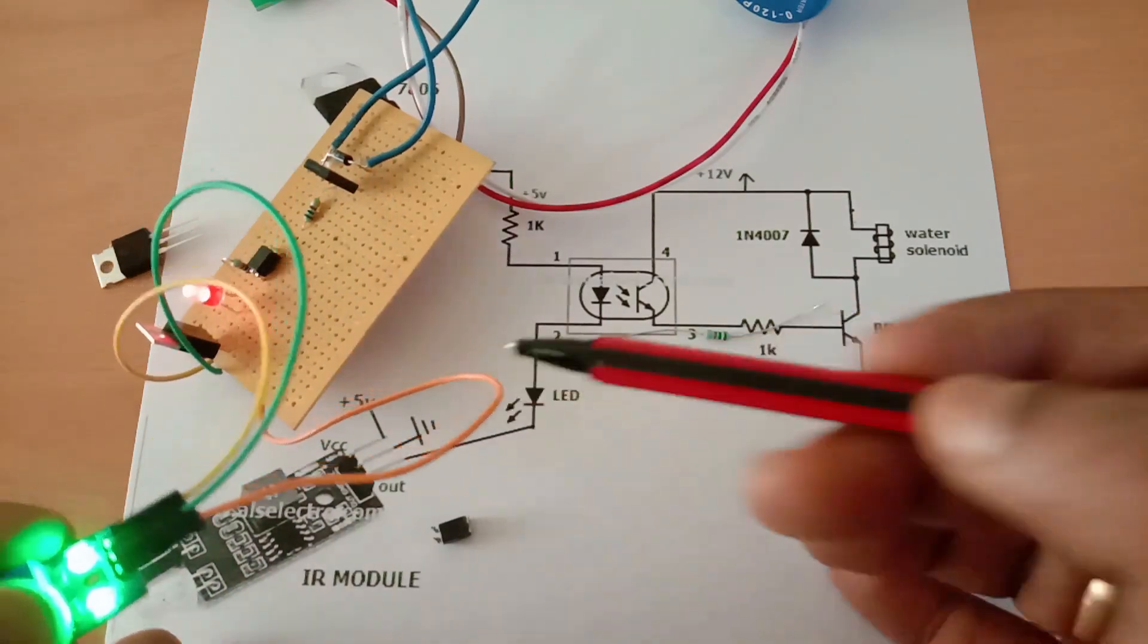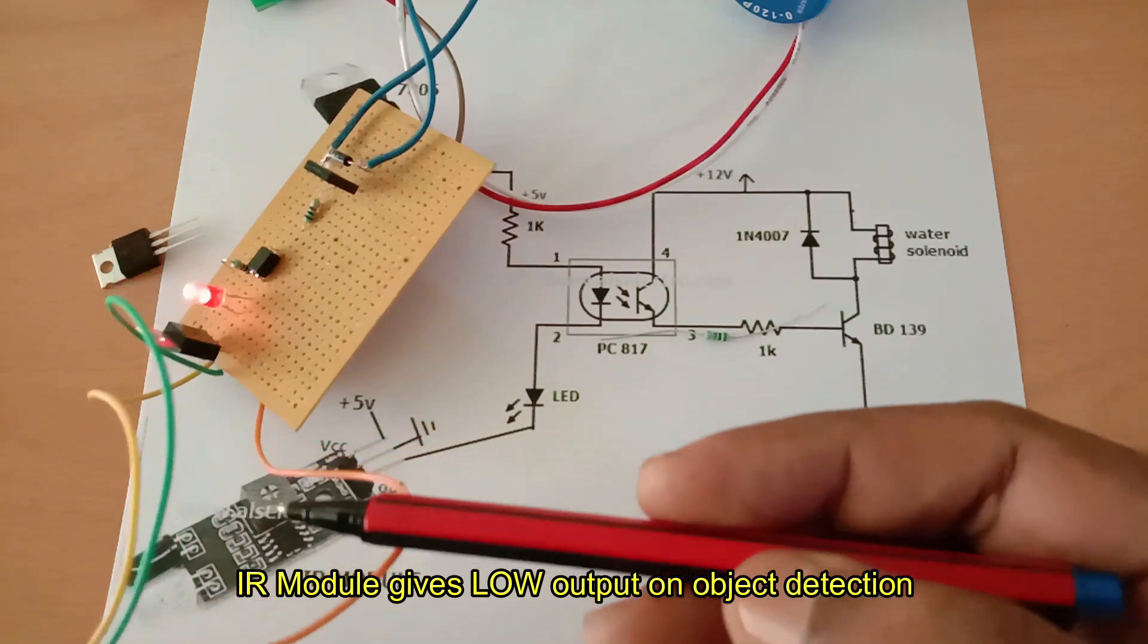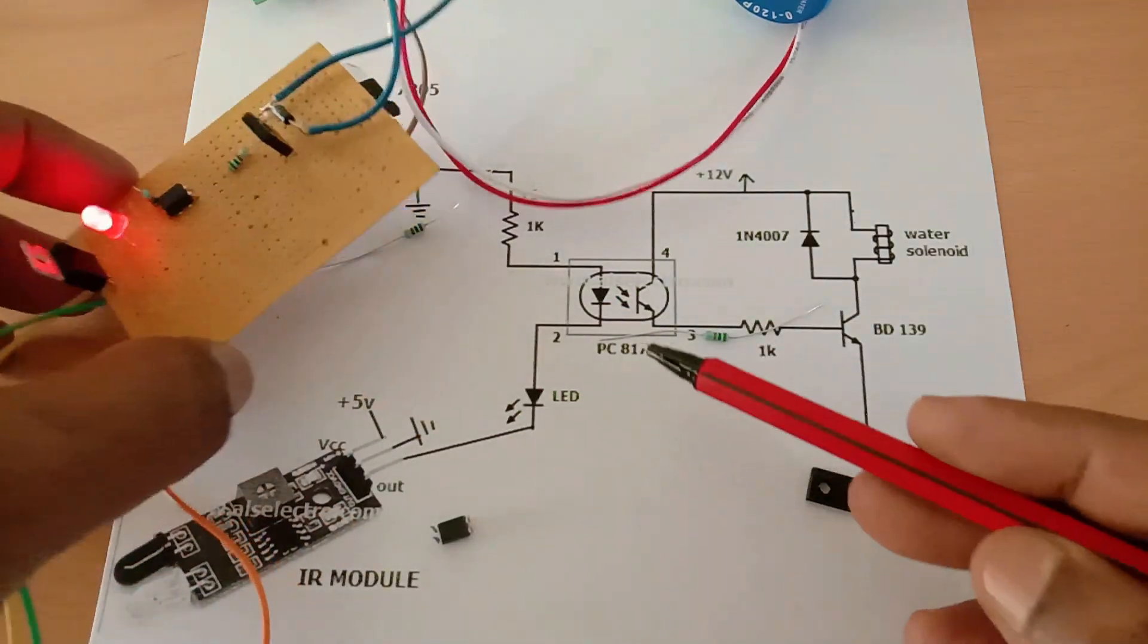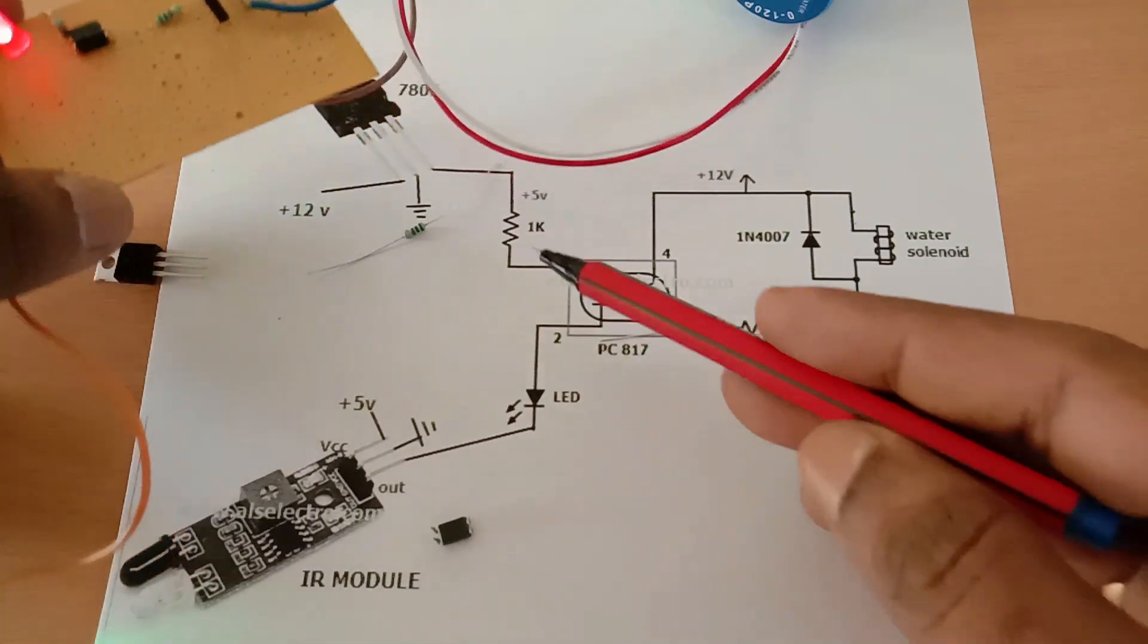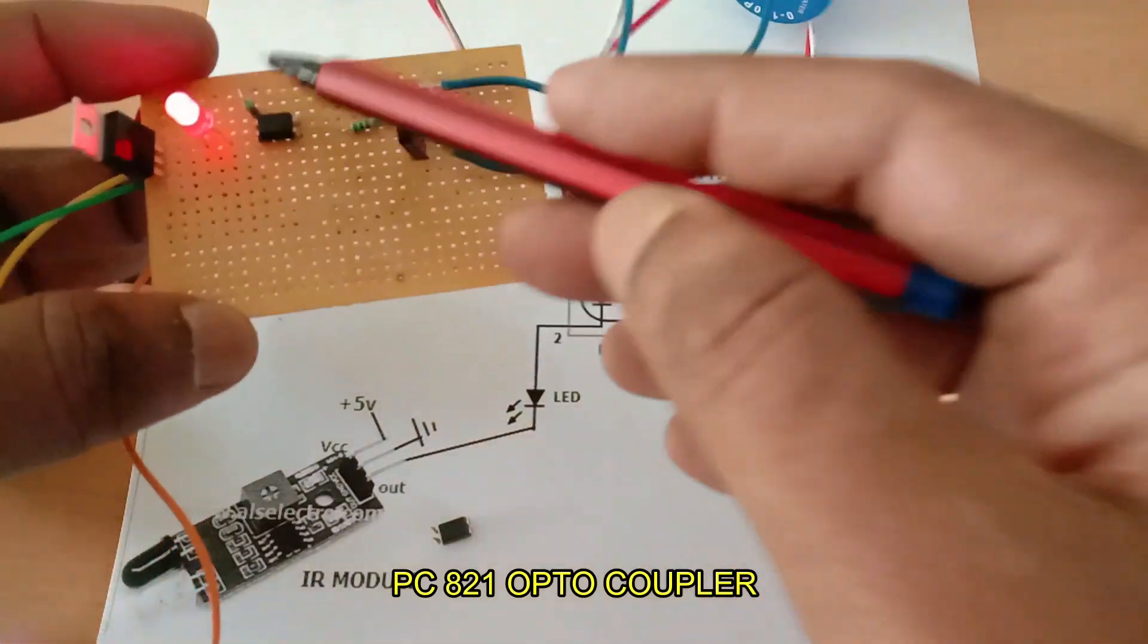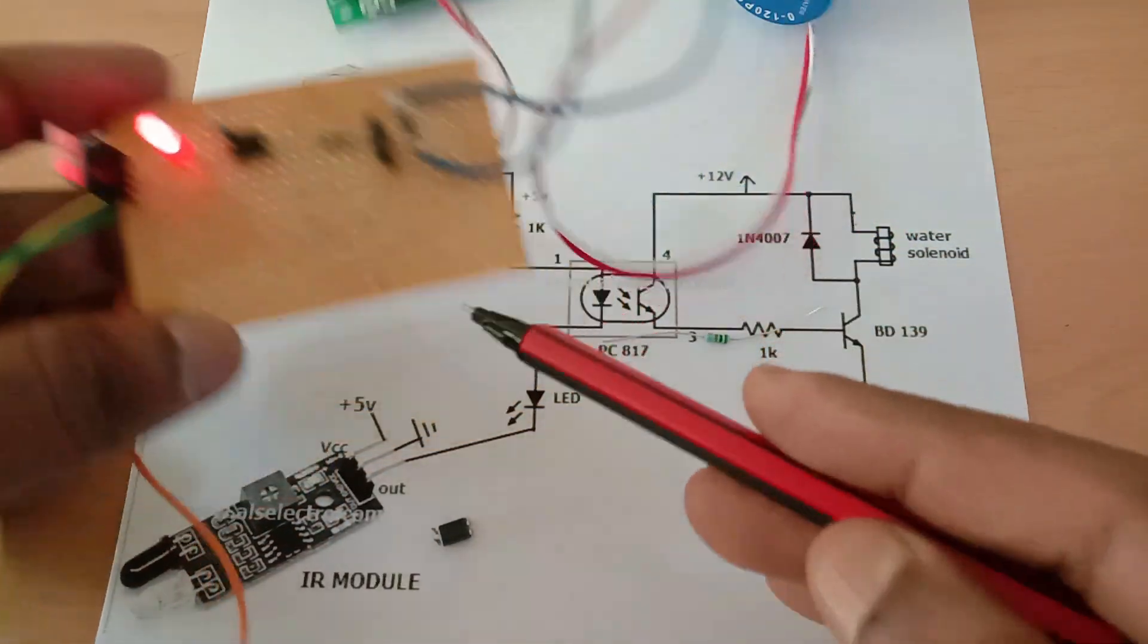When an object is detected, it gives a low output. This low will drive an optocoupler. The optocoupler used is PC817, which is a widely available, cheaper version. This optocoupler has got only four pins—the first pin is near the dot, and that is the anode of the IR LED.